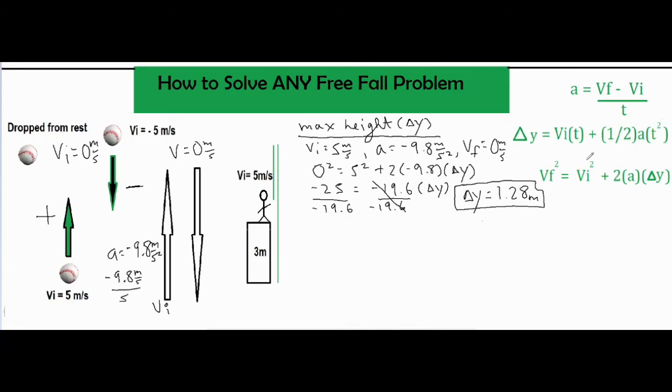I plugged in all my variables into this third formula. I have zero squared which is zero, and then five squared which is 25. After I subtracted 25 from both sides, I combined the two and the negative 9.8 to be negative 19.6, and that left me with one more step of dividing both sides by negative 19.6, and then I have a positive delta y of 1.28 meters.